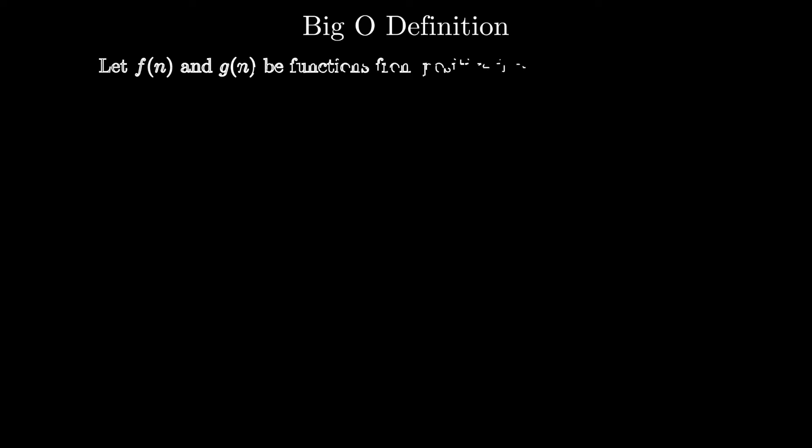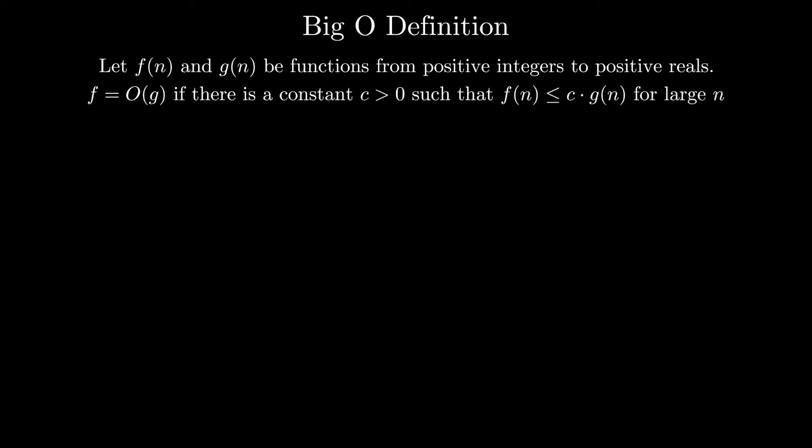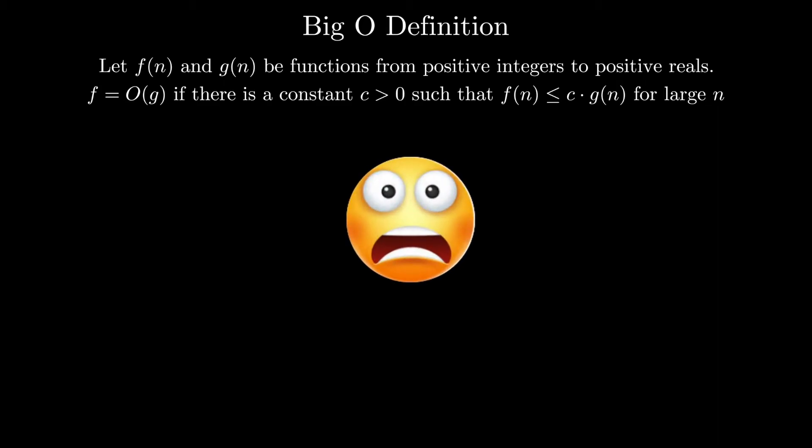Let f of n and g of n be functions from positive integers to positive reals. We say that f is equal to O of g if there is a constant c greater than 0, such that f of n is less than or equal to c times g of n. Wow, that's hard to say. Looking at this definition, it's understandable if your first reaction is what in the world is going on here. Let's take a moment to deconstruct this definition.